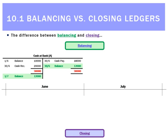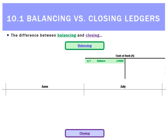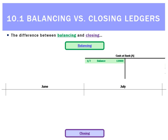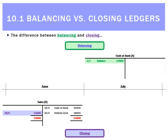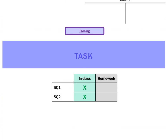Looking at the difference between balancing and closing: cash at bank has been balanced at the end of June, so that just shifts forward in time. We've carried the balance forward on the 1st of July, and at the start of July it just shows the opening balance. Looking at the sales ledger, there were $53,000 of sales in June. When we reset that to zero, we don't carry it forward to July. What it looks like in July is blank — because we've closed it and reset the balance to zero.